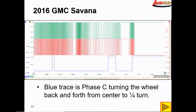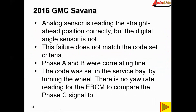This is a scope shot while doing that as well. The blue trace is phase C, turning the wheel back and forth from center to quarter turn. Right here where it's around zero is when the wheel is centered, and about a quarter turn it starts reading 12 volts. Back to center, quarter turn again — starts reading 12 volts. This should be reading 12 volts while it's centered, and it's not; it's reading 0 volts while centered. The analog sensor is reading the straight-ahead position correctly, but the digital angle sensor is not.